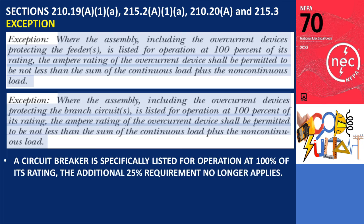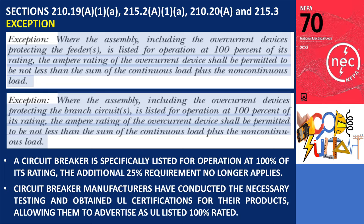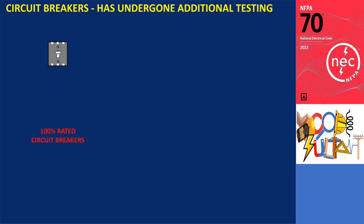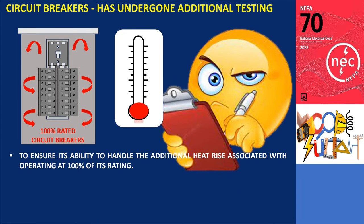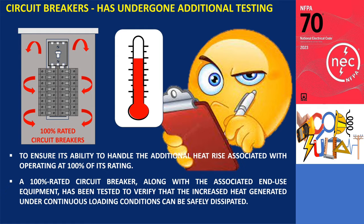This exception means that when a circuit breaker is specifically listed for operation at 100% of its rating, the additional 25% requirement no longer applies. Instead, the device simply needs to handle the total of the continuous load and the non-continuous load. Many circuit breaker manufacturers have conducted necessary testing and obtained UL certifications, allowing them to advertise as UL listed 100% rated. This signifies that the equipment has undergone additional testing to ensure its ability to handle the additional heat rise associated with operating at 100% of its rating.